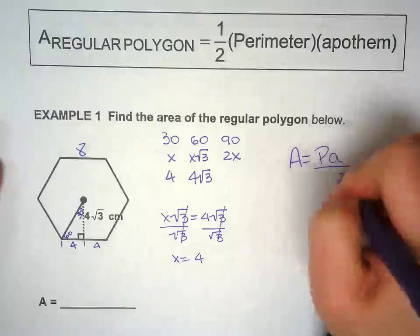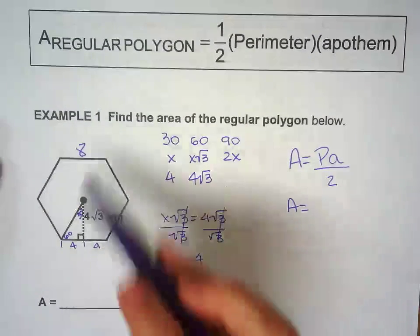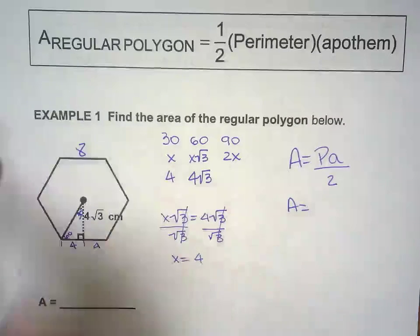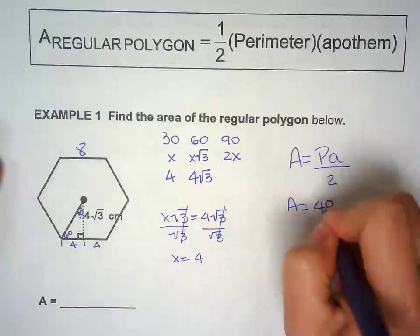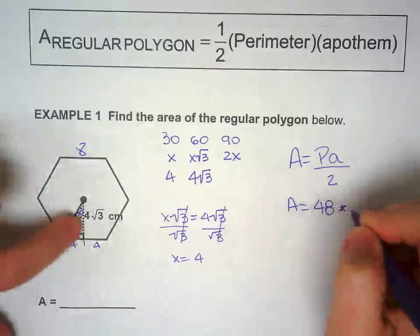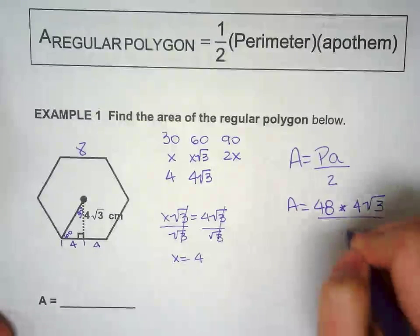Area: perimeter times apothem divided by 2. Perimeter is all around 8, 8, 8, 8, 8, 8. So 6 times 8 is 48, times apothem, apothem right there, 4 square root of 3, divided by 2.